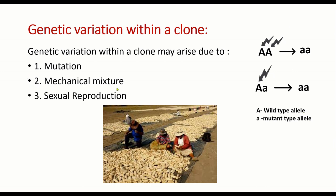Second source of variation is mechanical mixture — during agronomic operations, seed drying, transportation, or loading, seed admixtures occur and contribute to impurities in the seed lot. This may contribute to five to ten percent impurity at maximum. Third source is sexual reproduction: if there is a reproductive stage in the vegetatively propagated crop, hybridization is possible after one or two years of vegetative phase, as in sugarcane.